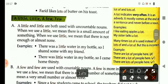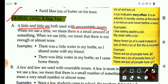Now, a little, little, a few, and few. A little and little are both used with uncountable nouns. When we use a little, that means there is a small amount of something. And when we use little, that means there is not enough or almost none. Let's see an example. There was a little water in my bottle. It's showing a small amount, so I shared some with my friend.